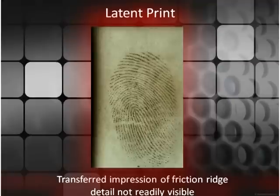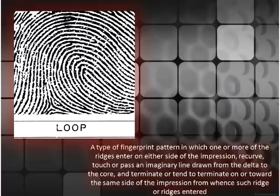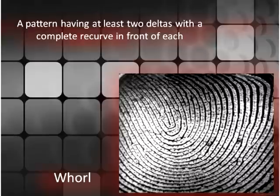Latent Print: a transferred impression of friction ridge detail not readily visible. Loop: a type of fingerprint pattern in which one or more of the ridges enter on either side of the impression, recurve, touch or pass an imaginary line drawn from the delta to the core, and terminate or tend to terminate on or toward the same side of the impression from whence such ridge or ridges entered. Whirl: a pattern having at least two deltas with a complete recurve in front of each.